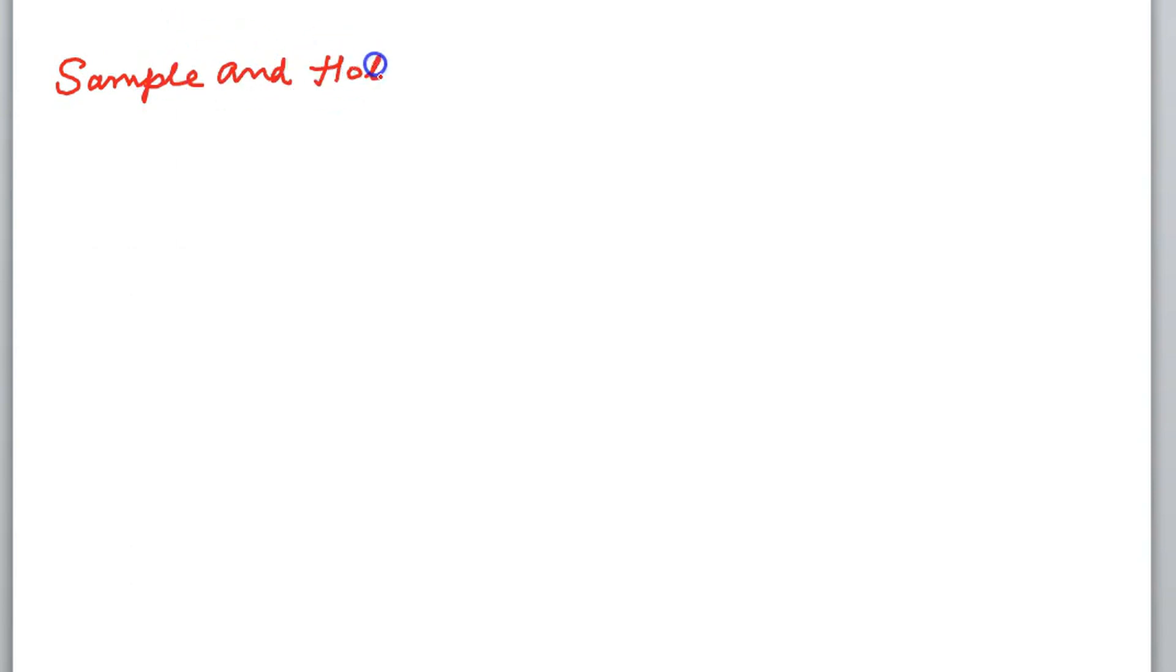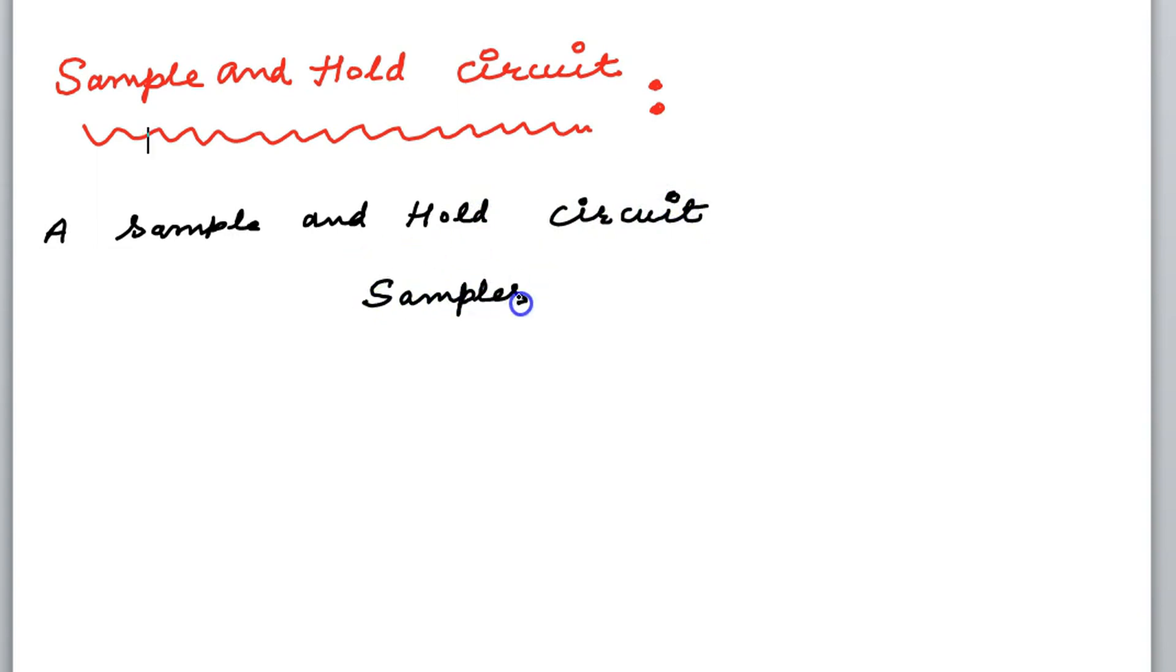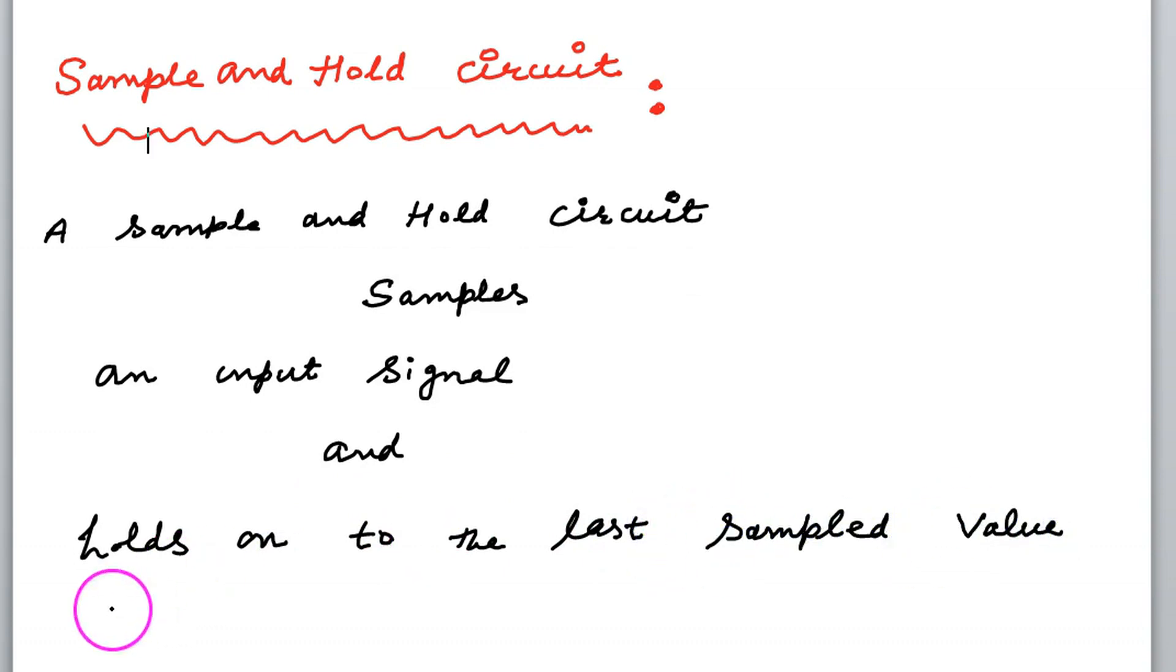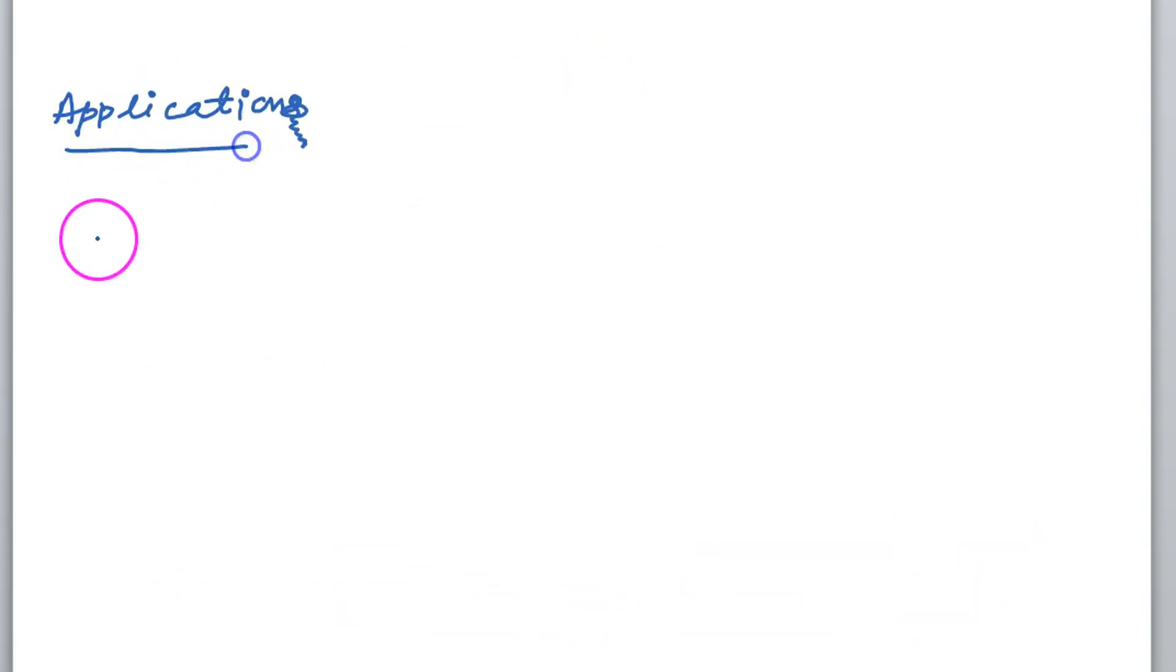Sample and Hold Circuit. Today we will discuss what we mean by sampling. A sample and hold circuit first of all samples an input signal and then holds on to the last sampled value until the next input is sampled again.